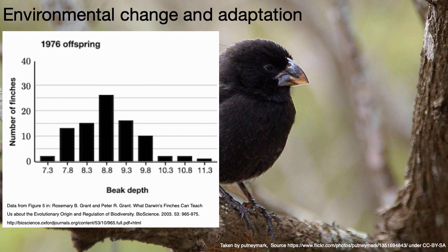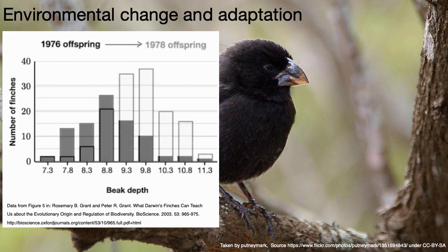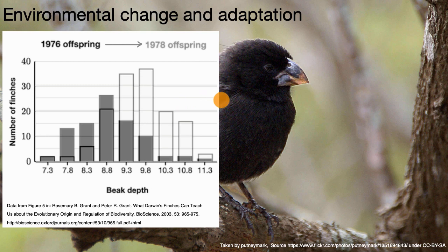That is indeed what scientists observed. Going from 1976 to 1978, the distribution shifted a pretty good bit to the right — the most common beak depth is now 9.8 millimeters. This is an example of an environmental change, a drought, changing the food supply by leaving fewer small seeds available, and shifting the distribution of beak depths over just two years.